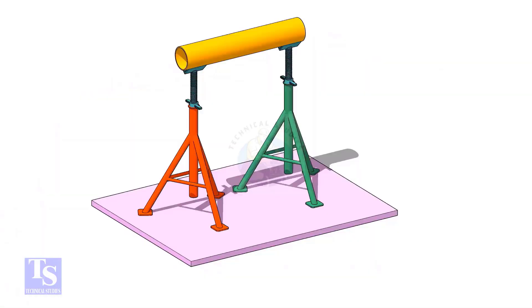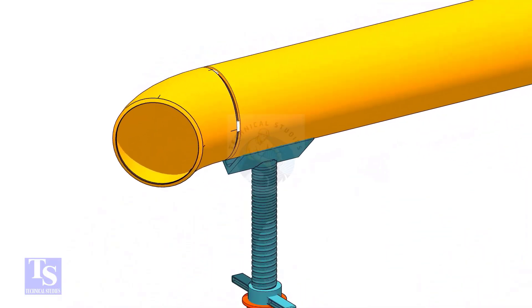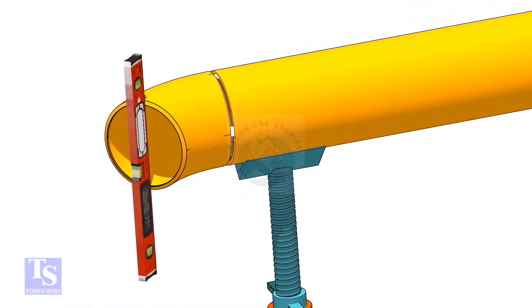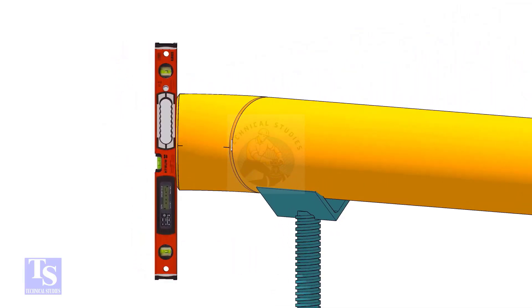TAC weld one elbow on a pipe of the same size. Level the elbow face through the center mark.